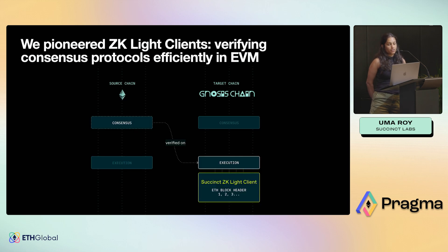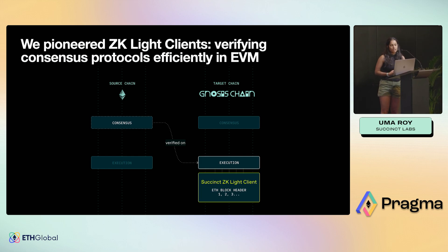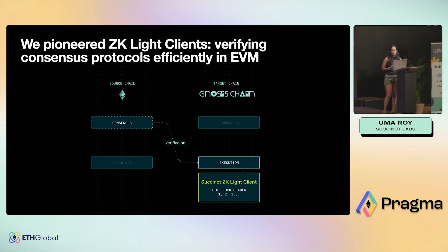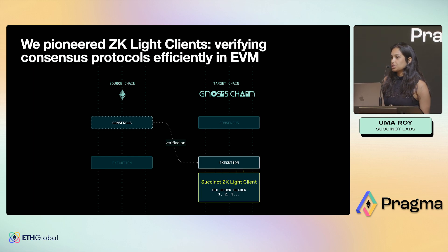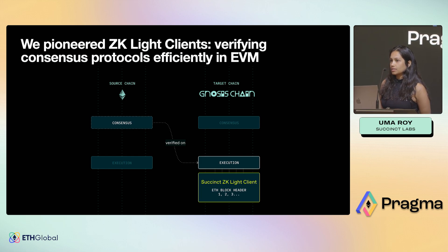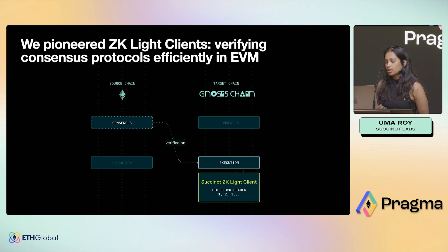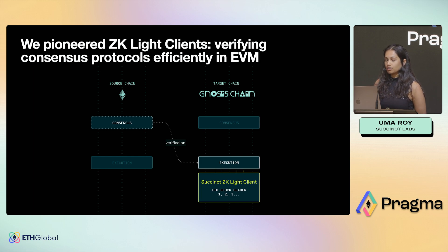We pioneered the concept of ZK light clients. A TL;DR of a light client is: you verify the consensus of a source chain in the execution layer of a target chain. This is useful because the target chain can now know the source chain state natively, and chains can talk to each other without the need for a centralized intermediary or multi-sig. Most existing cross-chain bridging solutions rely on trusted multi-sigs, so gas-efficient ZK SNARK-based light clients enable much more secure interoperability.